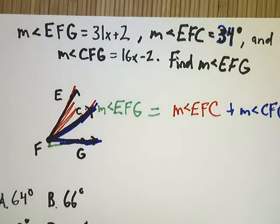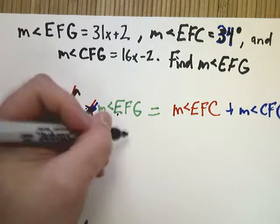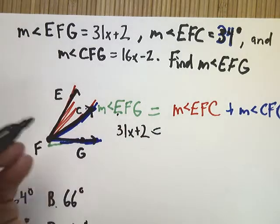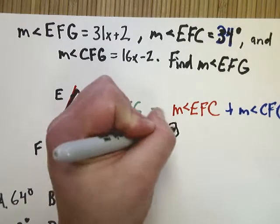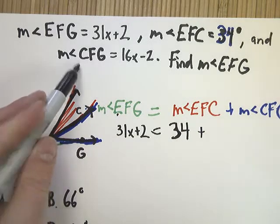And now that I have it set up, it's really a simple solution on the way down. So let's just do it. I'm going to place the value of EFG here. I'm going to place the value EFC here. And I'm going to add the value of CFG here.